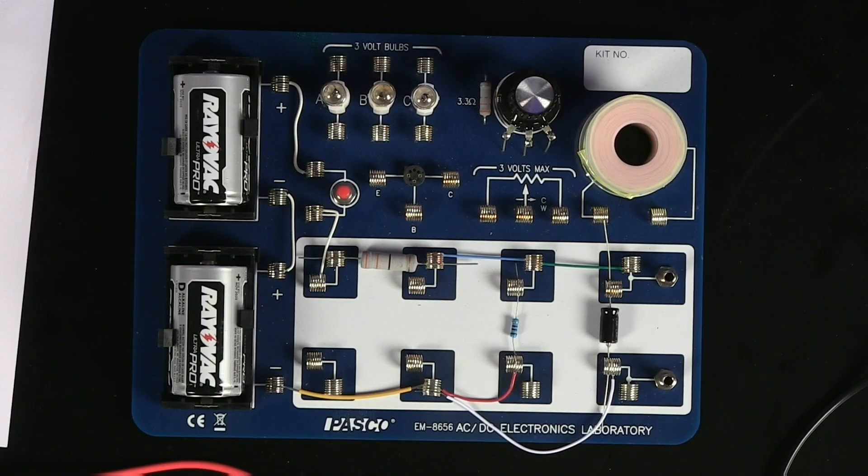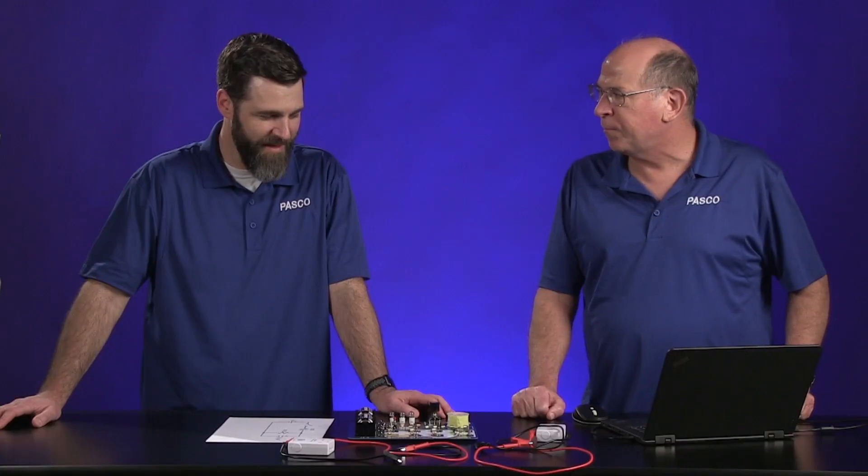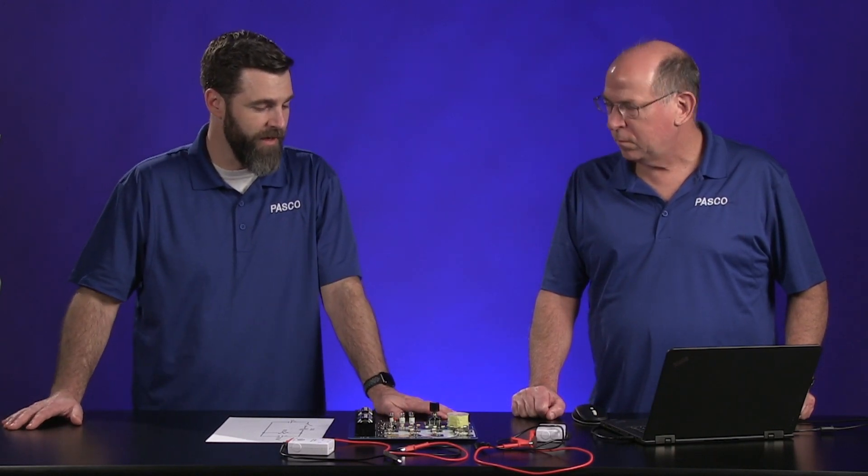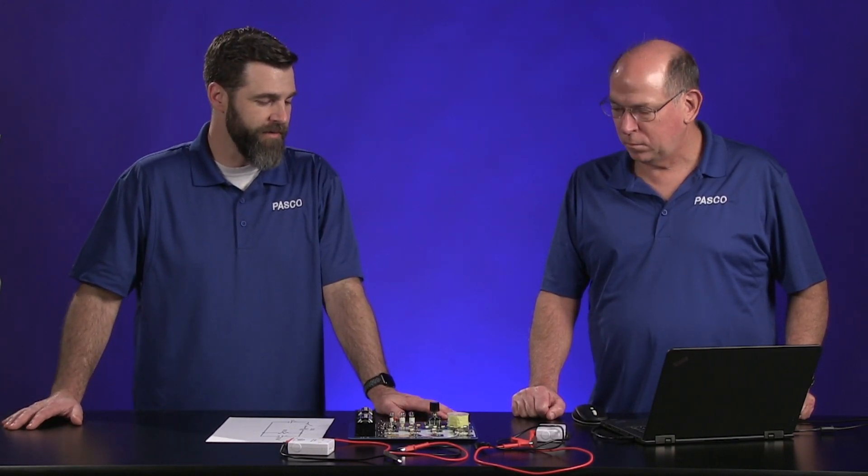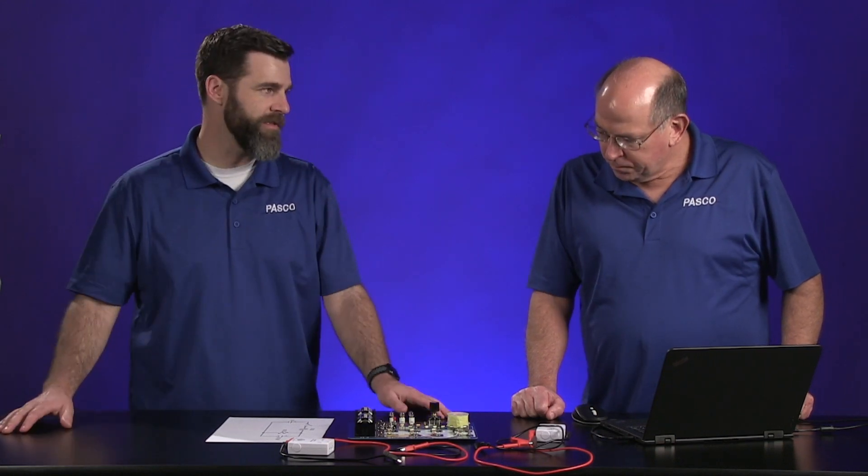What do you have the PASCO AC-DC Electronics Laboratory circuit board out for, JJ? We're going to do an experiment with a circuit that has a resistor, actually two resistors, and a capacitor in it, or an RC circuit.